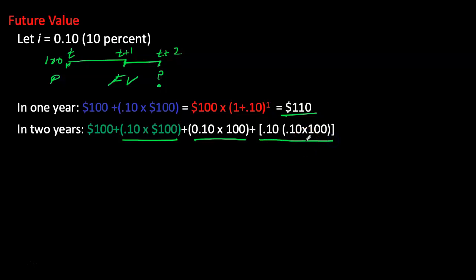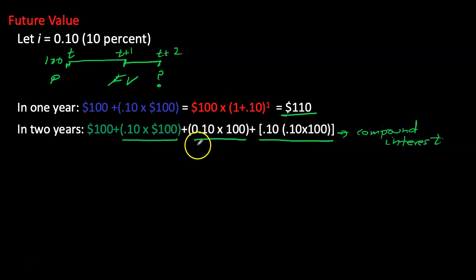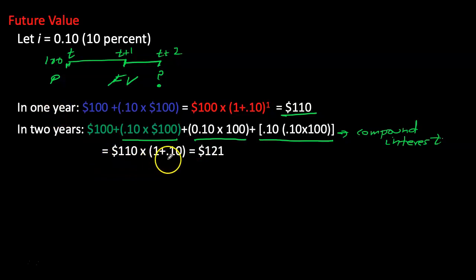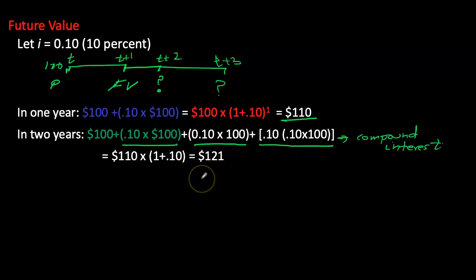This is an example of compound interest. With simple interest, I would earn $110 from the first year and then another 10% on just my principal. But with compound interest, I also earn interest on the $10 interest from year one. We simplify this as $110 times 1.10, giving us $121 after two years.